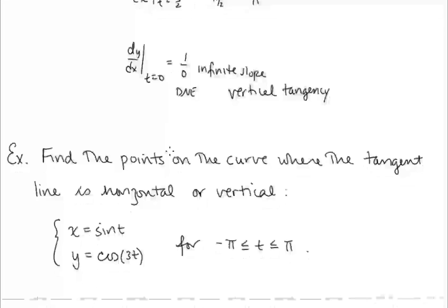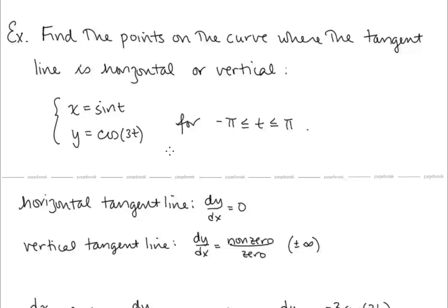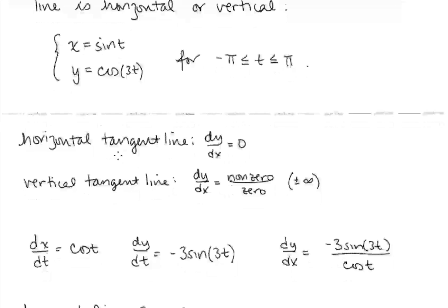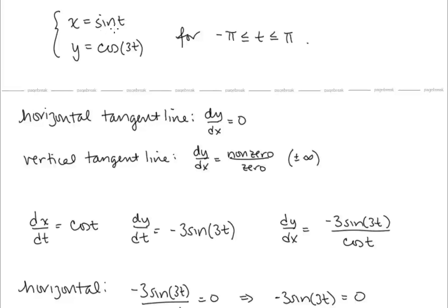Let's find the points on a curve where the tangent line is horizontal or vertical. For a vertical tangent, we want dy/dx to be non-zero over zero. For a horizontal tangent, we want dy/dx equal to zero. We compute dy/dx: dx/dt equals cosine t, dy/dt equals negative 3 sine 3t, so dy/dx equals negative 3 sine 3t over cosine t.